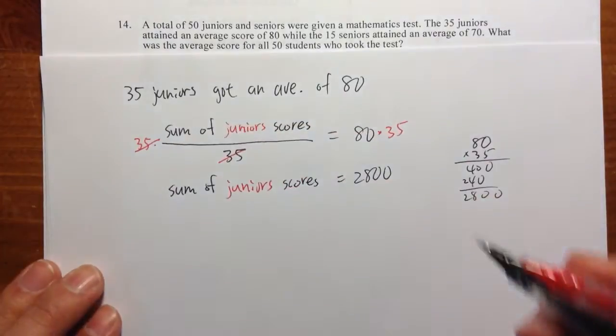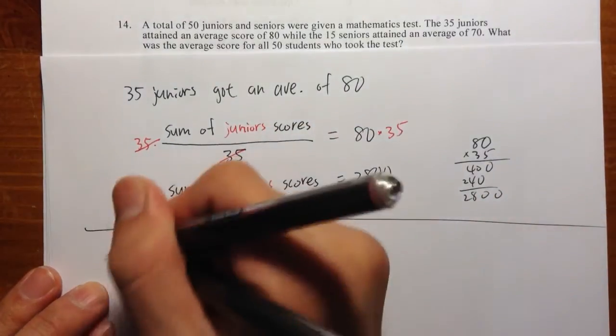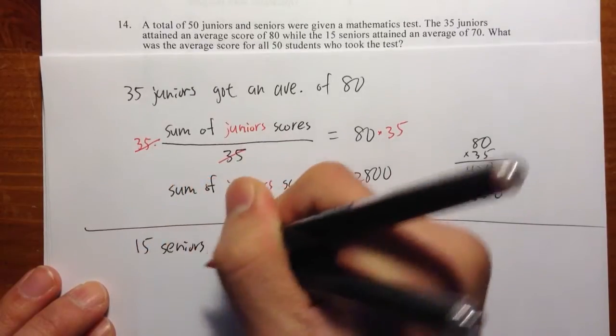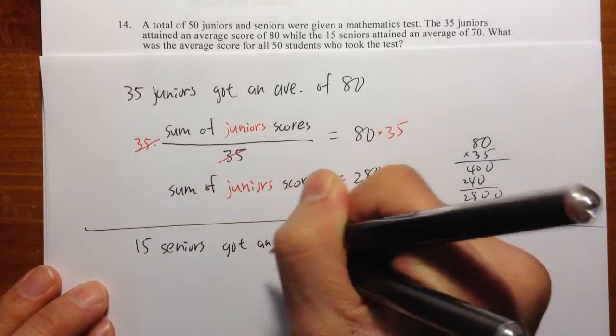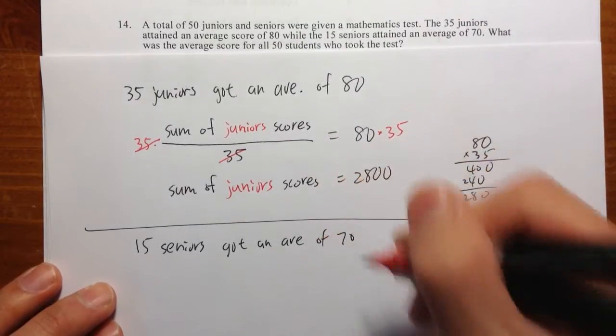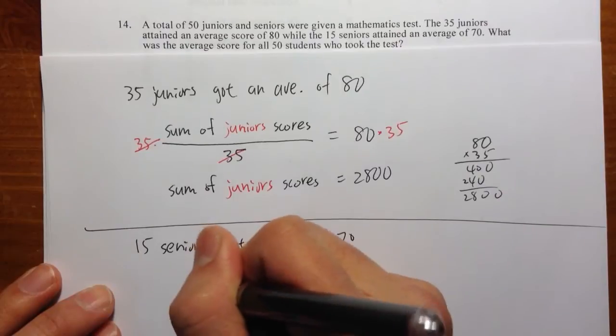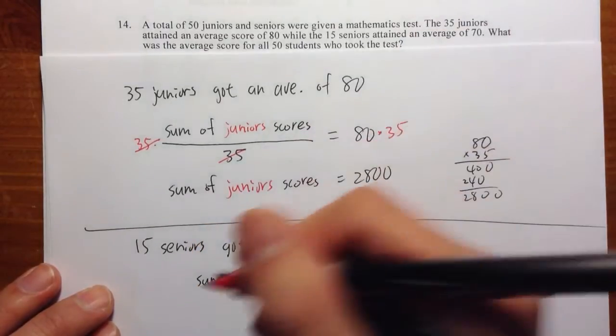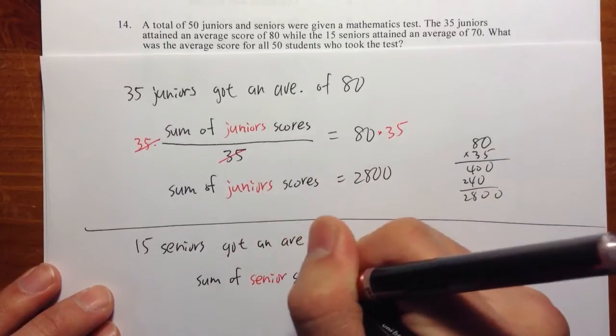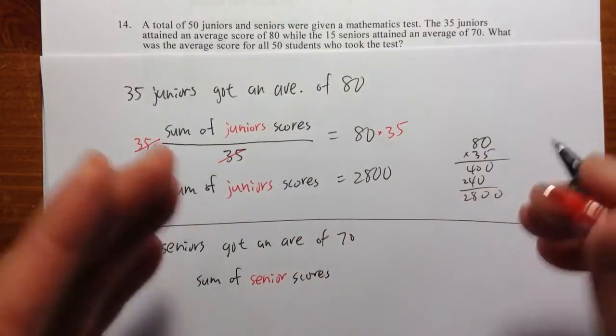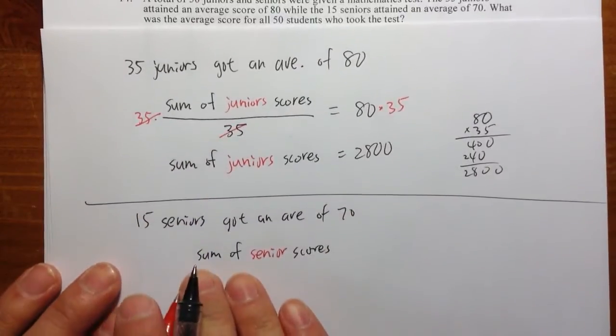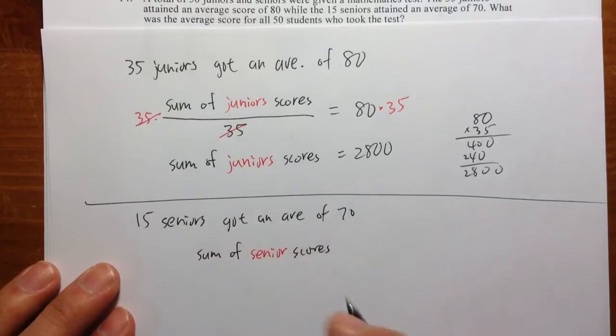Anyways, so we took care of the juniors. Now let's take a look of the seniors. There are 15 seniors. They got an average of 70. So if we do the same procedure, the sum of the seniors' scores. So if you look at all the 15 tests from these seniors, if you add up all the scores, that's the sum of the seniors' scores.